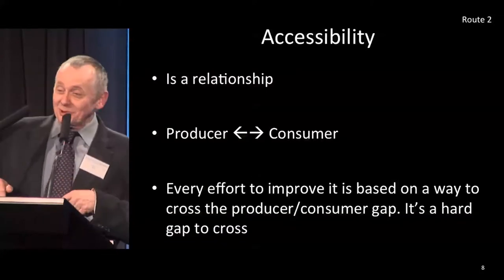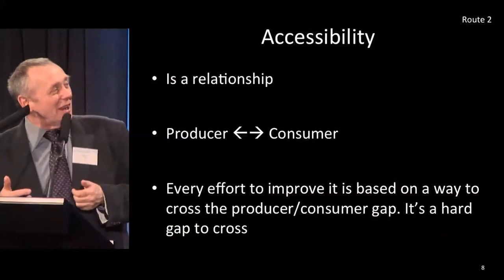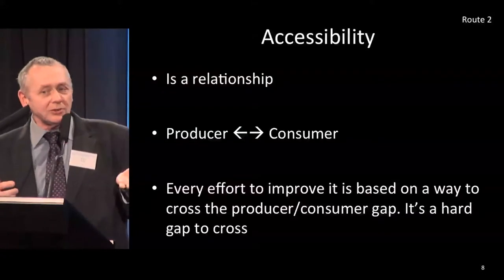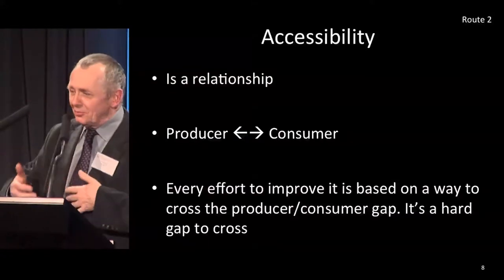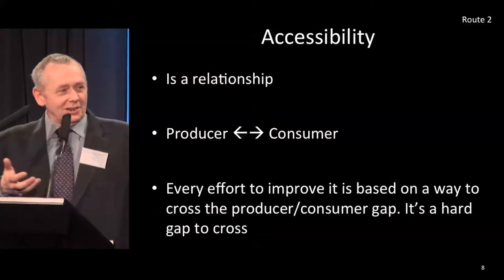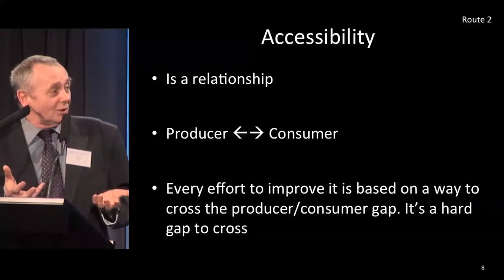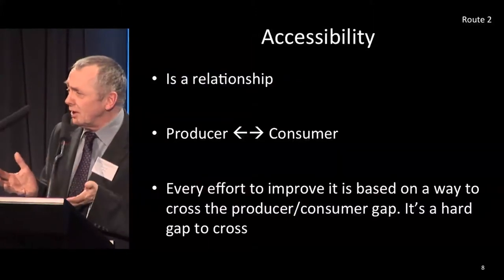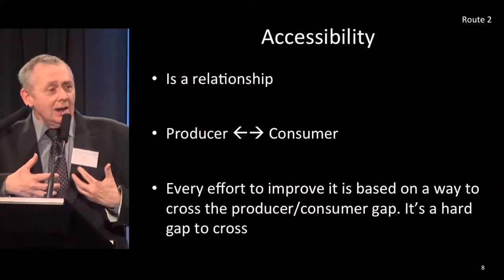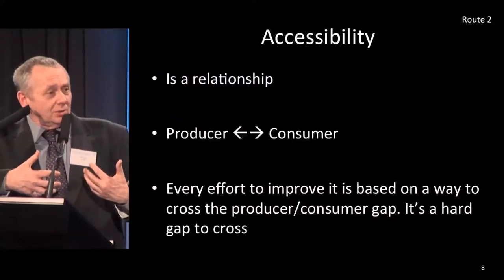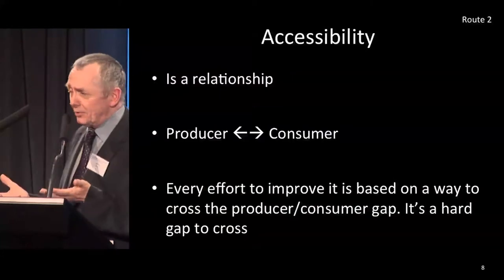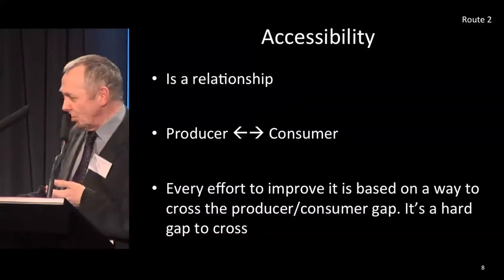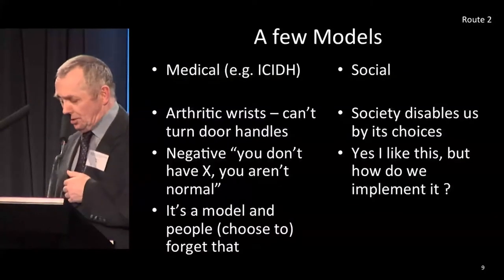Accessibility should be a setting in my preferences. In my view, it's a relationship between producer and consumer — I've produced something, you want to consume it. Does that actually work for you? It's a gap, and I think every one of the mechanisms that we've used to deal with accessibility is some way of managing that relationship. And if you think about it as a relationship, you can see particularly why some methods work better than other models.